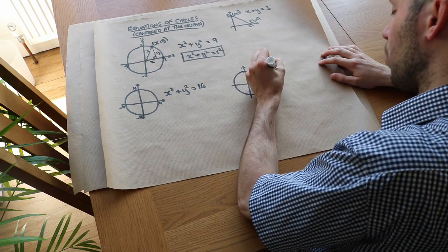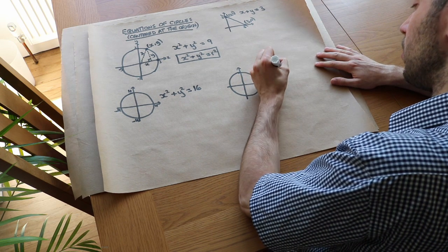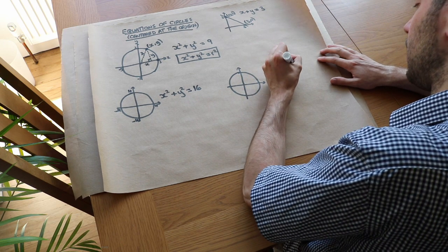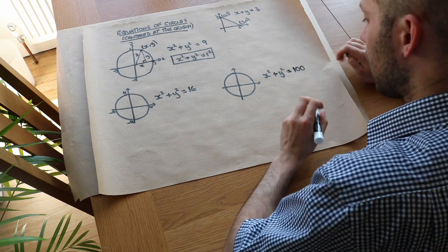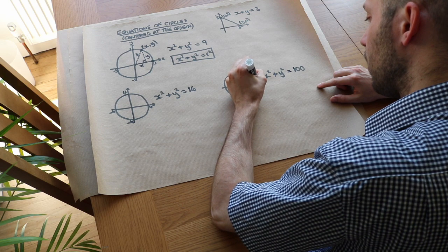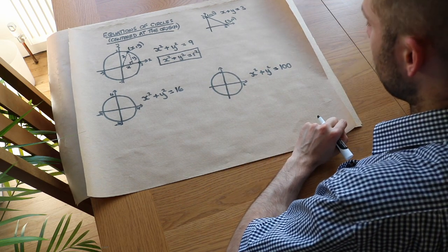And one more example. So if I was to say the equation, I'm going to give you the equation, x squared plus y squared is equal to 100, say. And I said that this x-intercept here was k. How do I work out what k is?